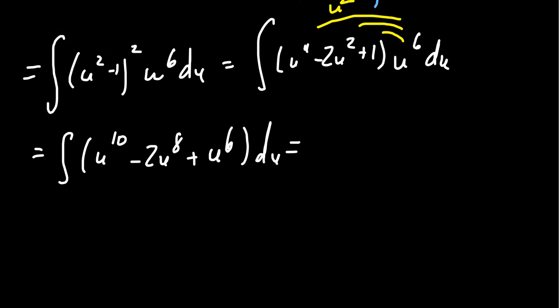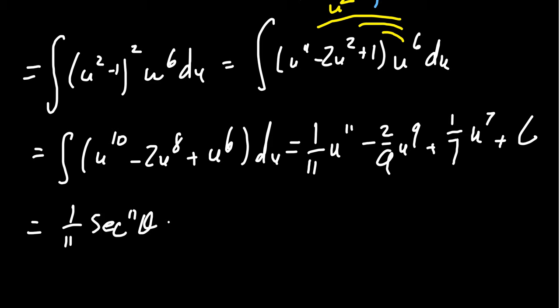We would end up with one eleventh u to the eleventh minus two ninths u to the ninth plus one seventh u to the seventh plus a constant. And now replace the u with secant of theta, which was our original substitution there, in which case we get one eleventh secant to the eleventh theta minus two ninths secant to the ninth theta plus one seventh secant to the seventh theta plus a constant. And here's our antiderivative.